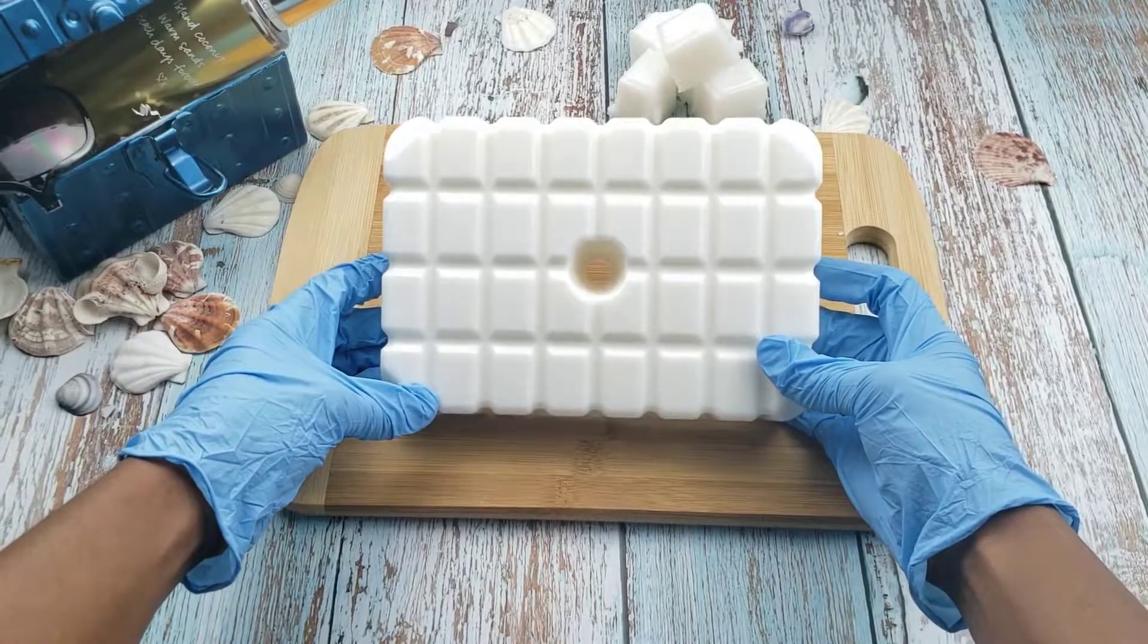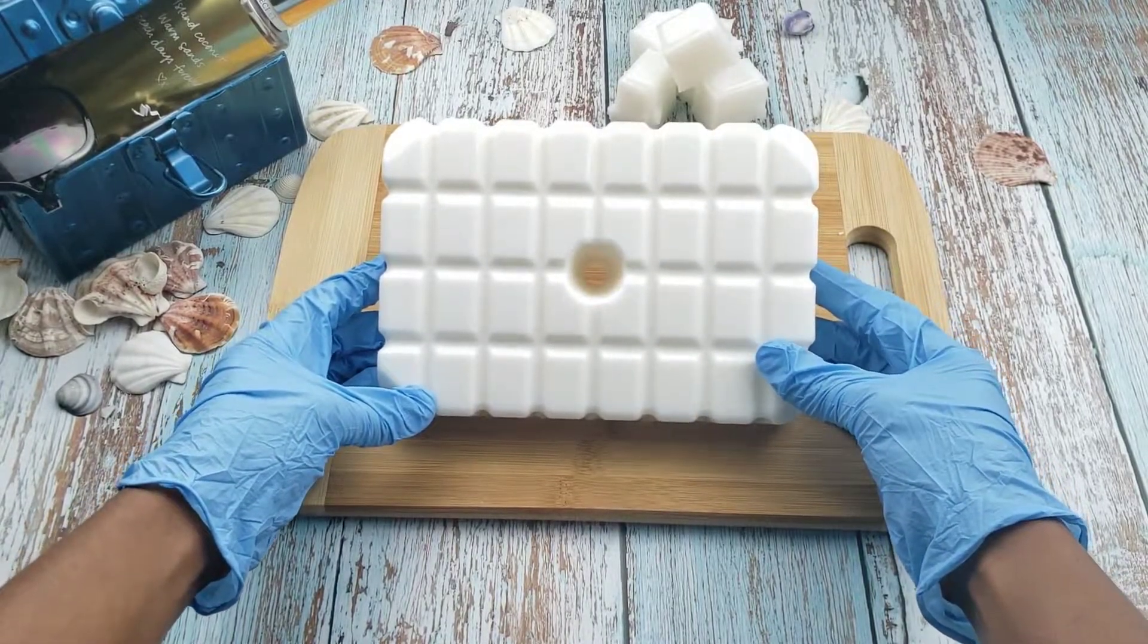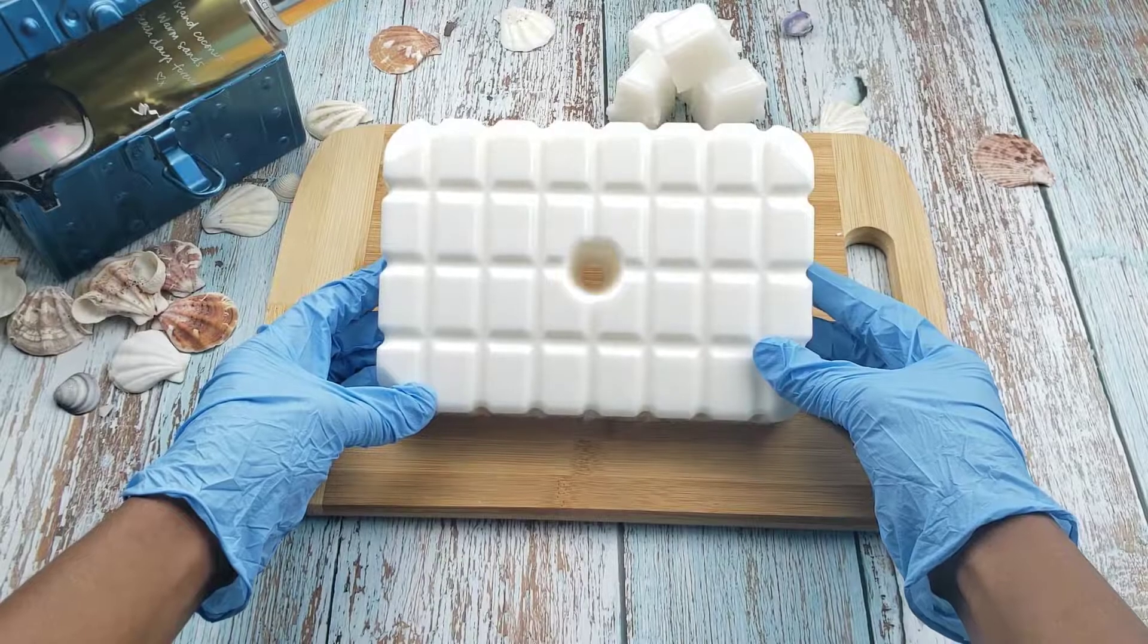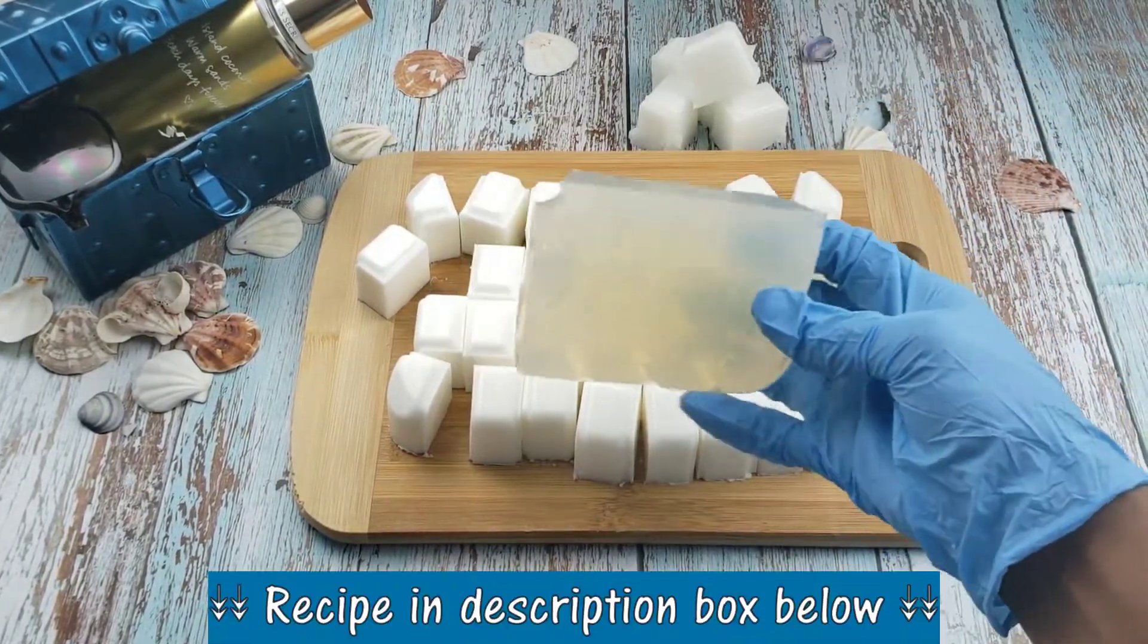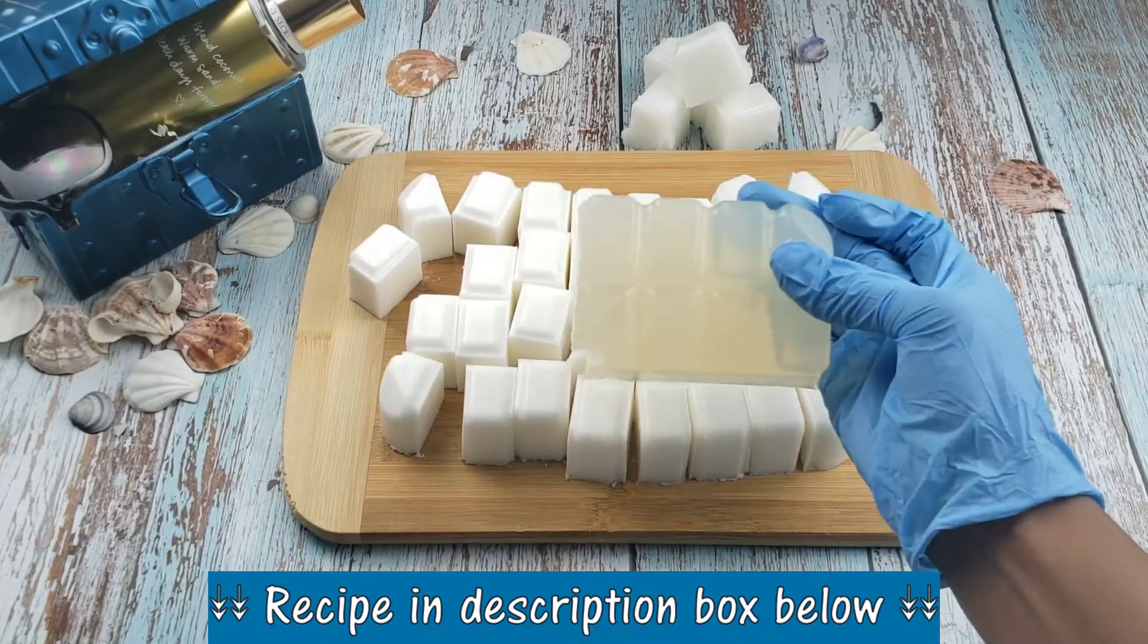I'm using this two pound coconut milk soap base. I'm going to cut this block into small cubes in preparation for melting. I'm also going to be using a half pound of a clear soap base.